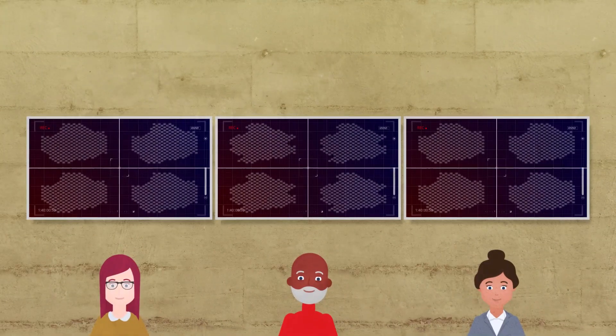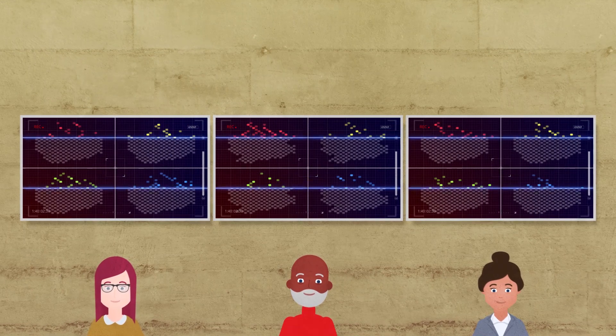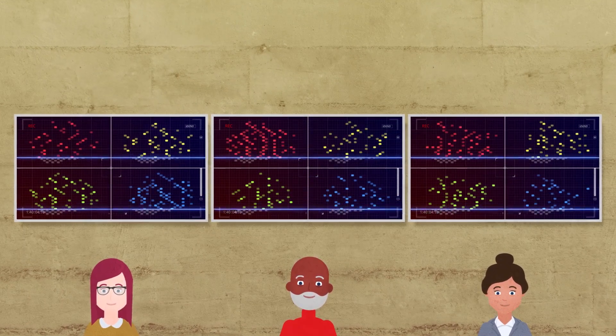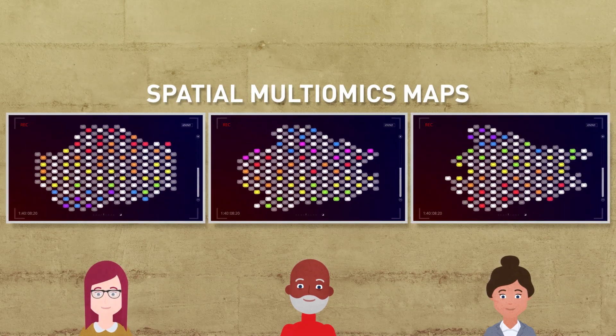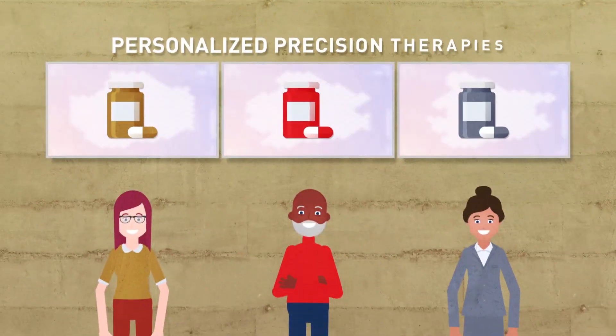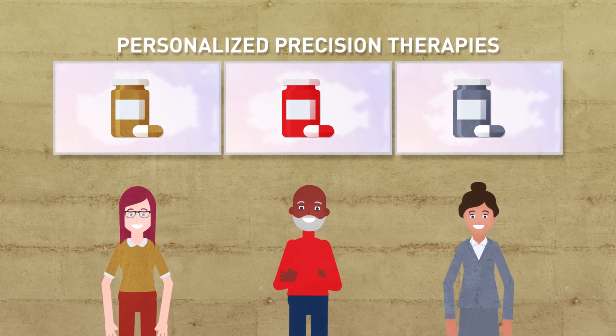The team combines deep learning and advanced imaging techniques in order to classify patients based on color barcodes at the molecular level called spatial multi-omics maps. These maps will enable personalized precision therapies for patients like Laura.